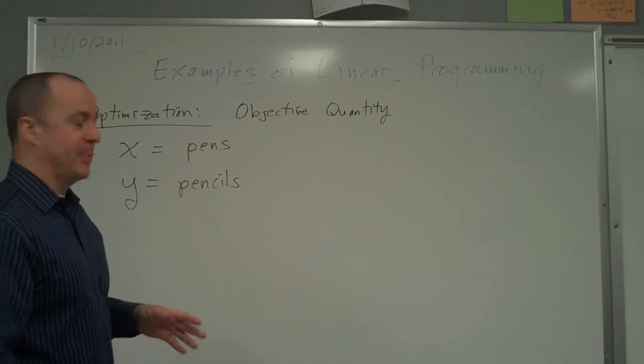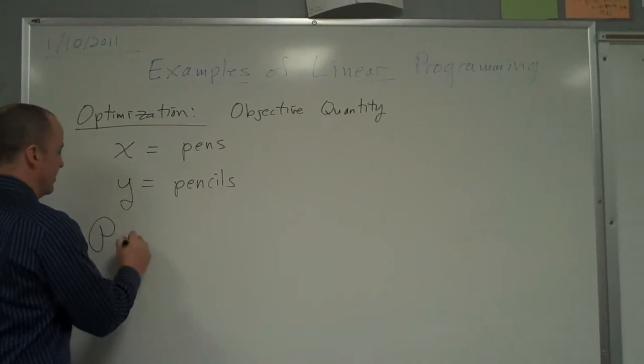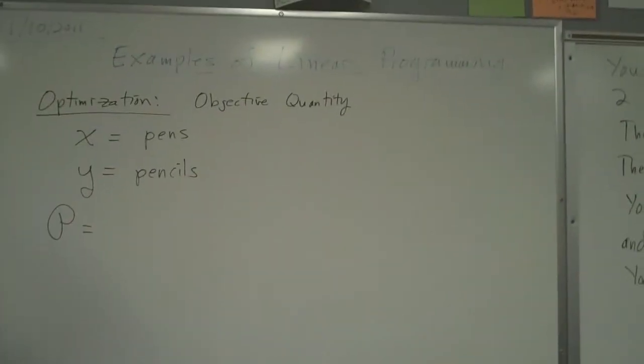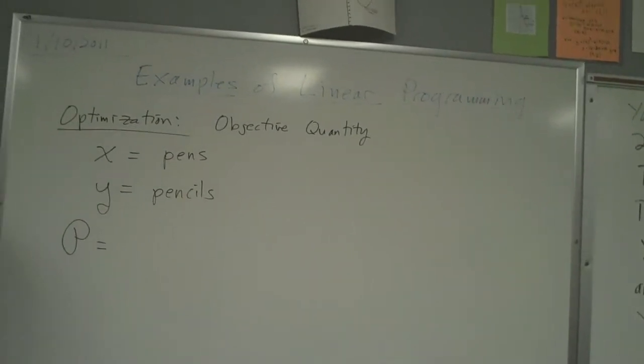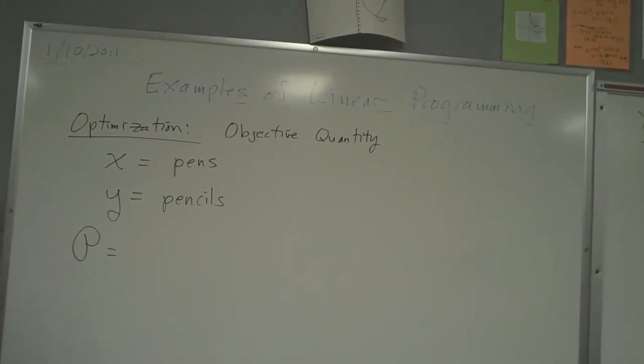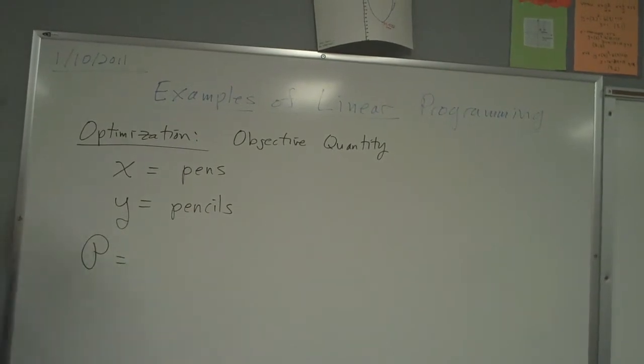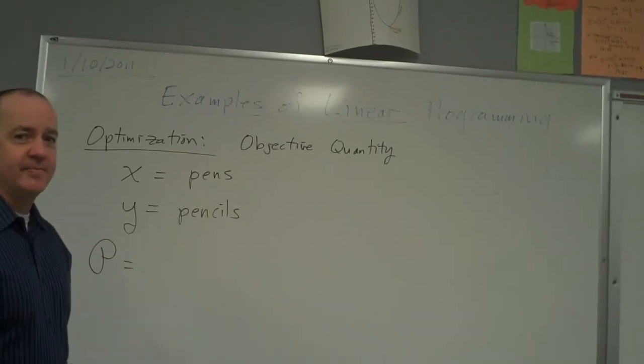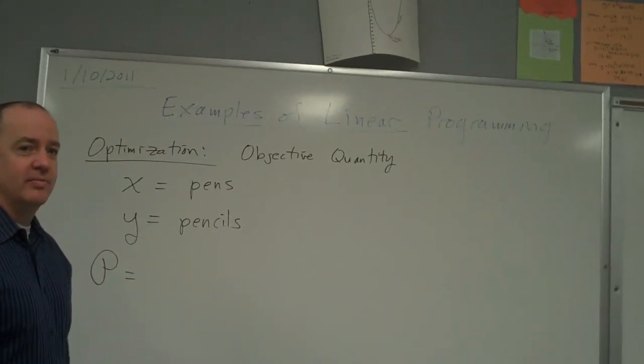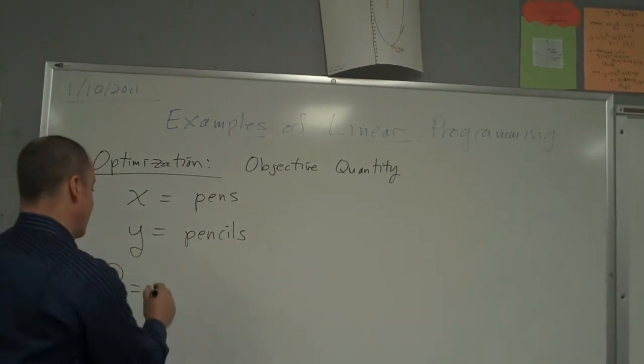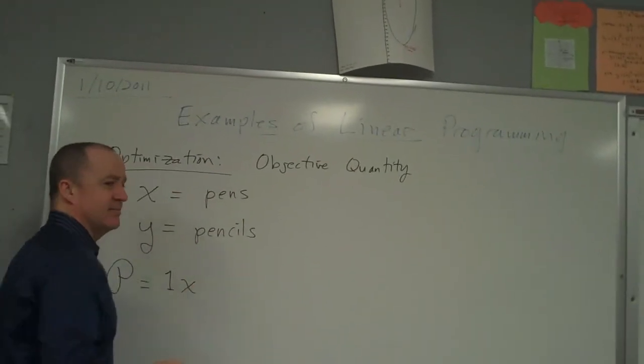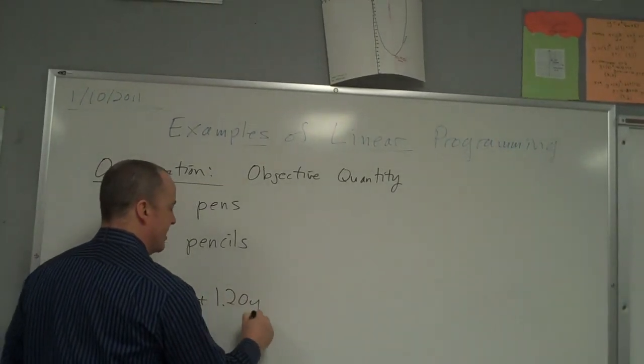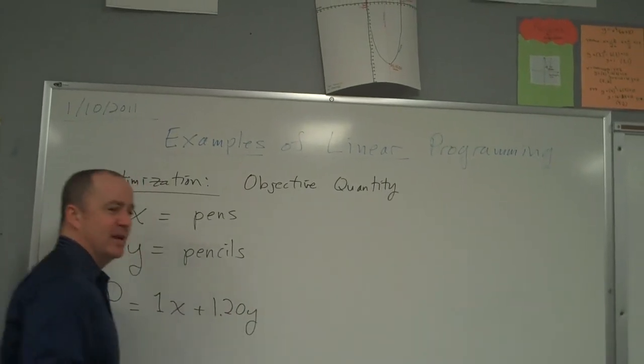I'm going to make a profit equation. What does my profit equal? X is the number of pens, I should say. Y is the number of pencils. One X, because you make one dollar multiplied times however many pens you sell. Plus one 20Y, plus a dollar 20Y because you make a dollar 20 for however many pencils you sell.